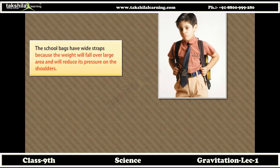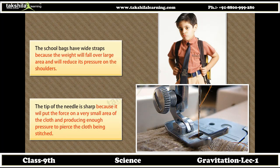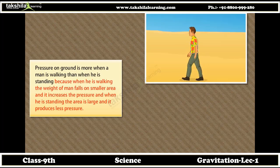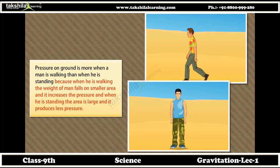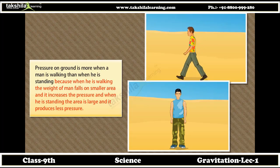Uses of pressure in everyday life: school bags have wide straps because the weight falls over a large area and reduces pressure on the shoulders. The tip of a needle is sharp because it puts force on a very small area of the cloth, producing enough pressure to pierce it. Pressure on the ground is more when a man is walking than when he is standing, because while walking the weight falls on a smaller area, increasing the pressure.